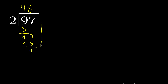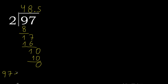There is no number that goes down, so complete with 0, and here add the decimal point. 2 multiplied by 5 is 10. 10 minus 10 is 0. Therefore, 97 divided by 2 is 48.5.